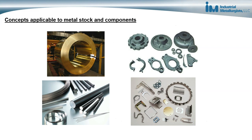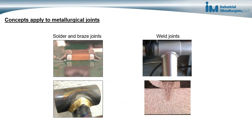These concepts apply to all metals, including metal stock and fabricated components. Components are fabricated by casting, stamping, machining, forging, extruding, and so on. It also applies to metallurgical joints between components, including solder and braze joints and weld joints between metals.